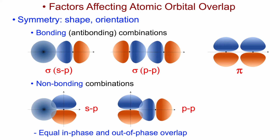Here's another example: a pz overlapping with a py. From the symmetry and geometry, the degree of positive in-phase overlap in one region would be accompanied by an equal amount of out-of-phase overlap in the other region. The net result is no gain or loss in energy — a non-bonding molecular orbital.